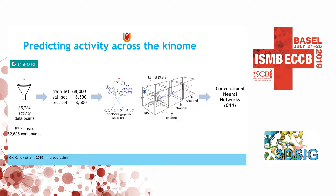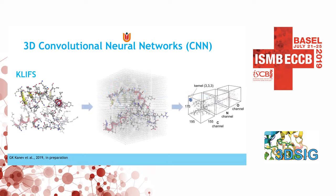In this case, we used ChEMBL. We downloaded 85,000 activity data points and after filtering ended up with almost 90 unique protein kinases and just over 52,000 compounds. We split the data into training, validation, and test sets, using 10% for validation and test. We prepared the ligands using molecular fingerprints, and prepared the kinase structures using the actual 3D structure of the binding site rather than a fingerprint or 1D representation.